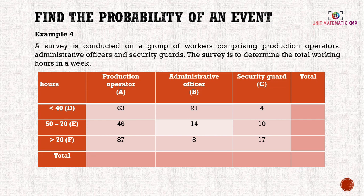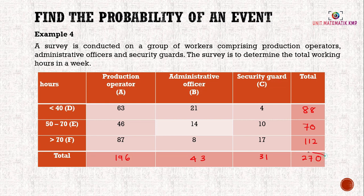Example 4: A survey is conducted on a group of workers comprising production operators, administrative officers, and security guards to determine total working hours in a week. The table is incomplete, so we complete it by adding up rows: 63+21+4=88, 46+14+10=70, 87+8+17=112, and so on. The total number of workers is 270, which is our sample space.